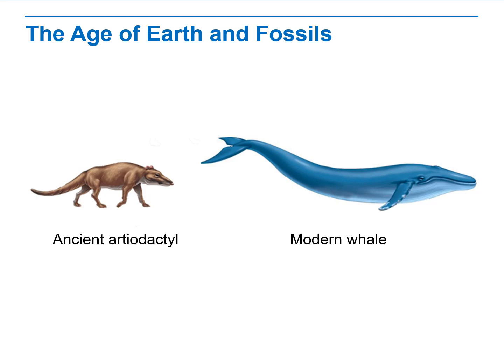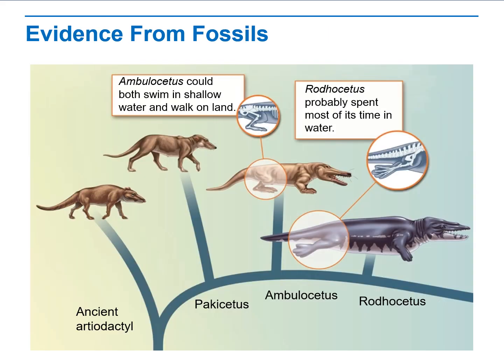One recently discovered fossil series documents the evolution of whales from ancient land mammals. Think about the evolution from ancient artiodactyl to modern whale — a shortening and change of limb shape is more adaptive to a water environment, as is a longer, more streamlined body. Researchers have found more than 20 related fossils that document the evolution of modern whales from ancestors that walked on land.